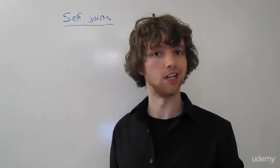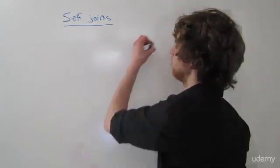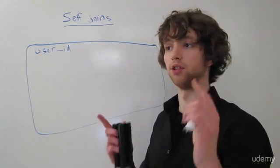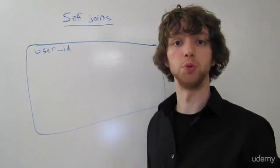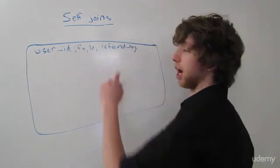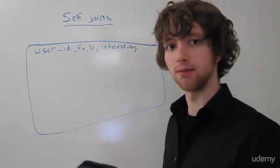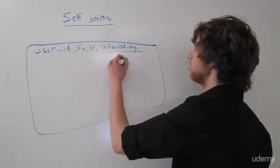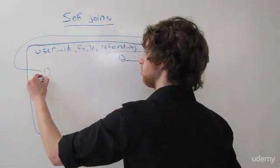And it can become a chain — this person refers this person, refers this person. So within a user table, you might have a user ID, and then on top of that you're going to have email, first name, last name, and the person who referred you. I'm putting the person who referred you within a column known as referred by.